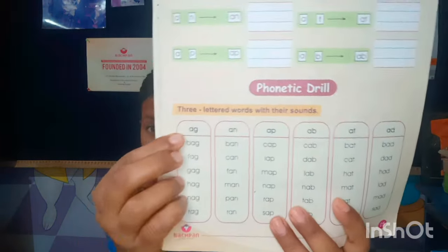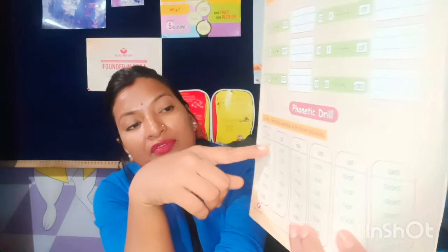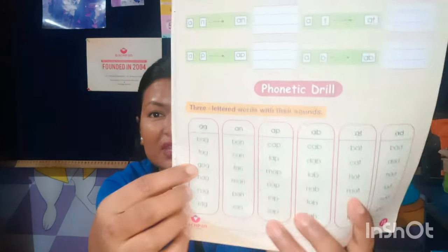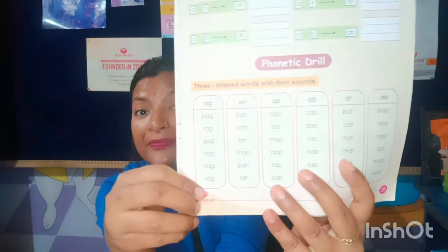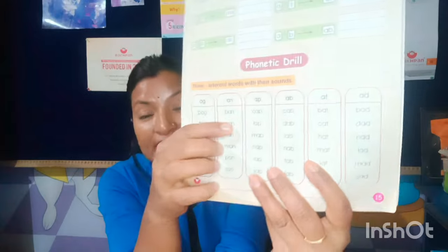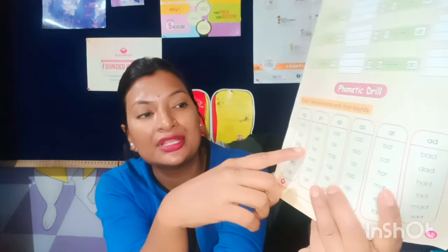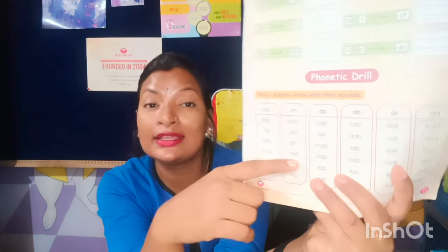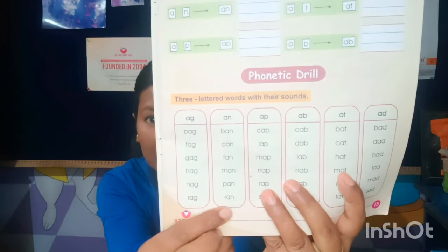Let's see A-G sound words — blending: B-A-G: bag; F-A-G: fag; G-A-G: gag; R-A-G: rag. So we can see how we blend different letters to form words. Next blending word is A-N: B-A-N — ban; C-A-N — can; F-A-N — fan; M-A-N — man; P-A-N — pan; R-A-N — ran.